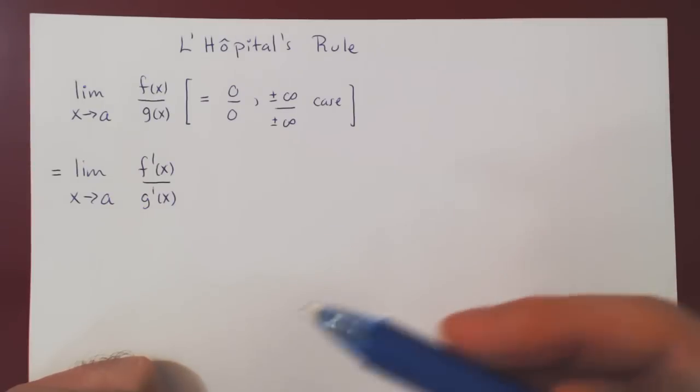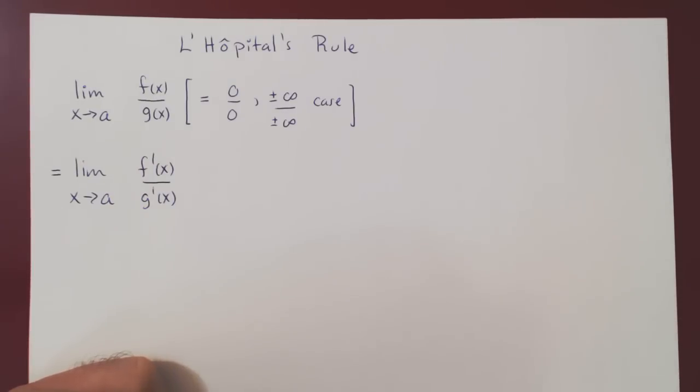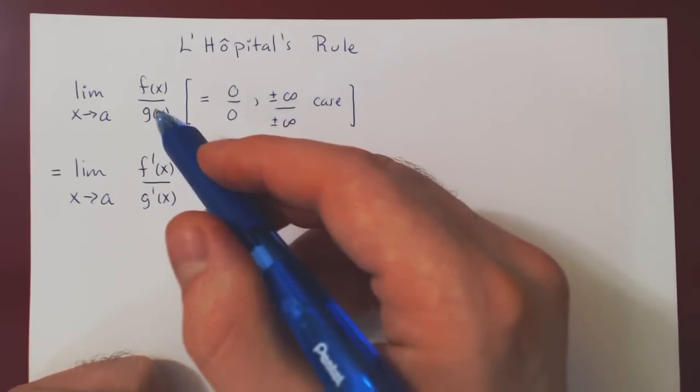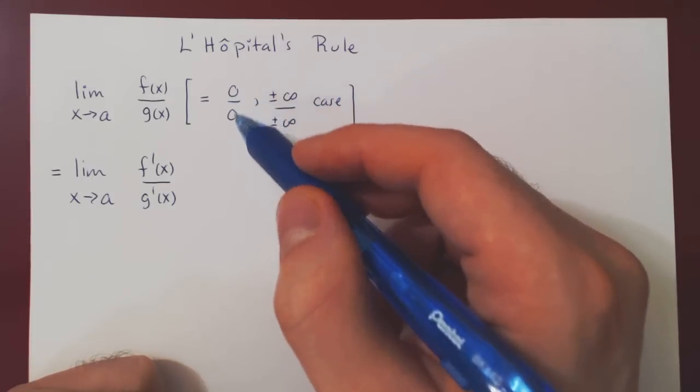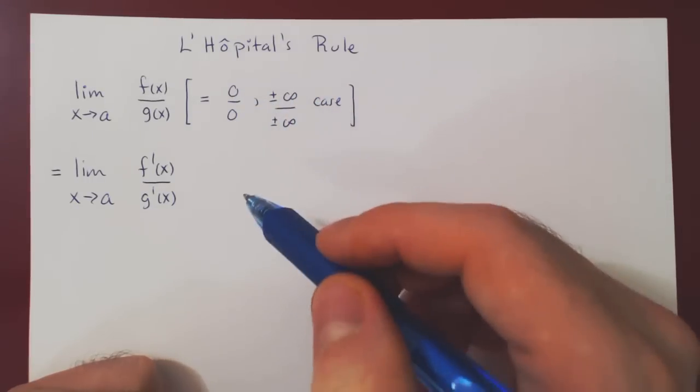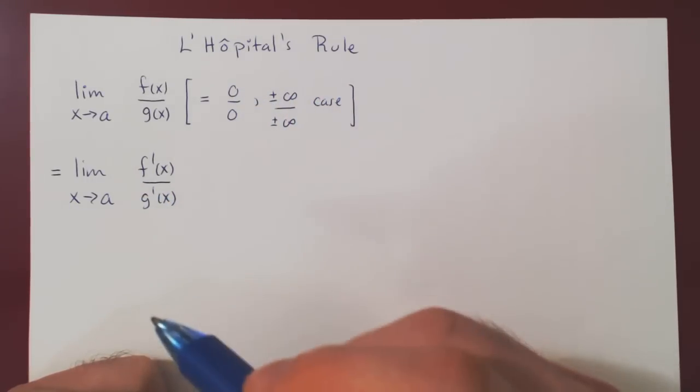Now, one thing that is nice, and we'll see in our last example in this video, is if the new limit returns a 0 over 0 case or infinity over infinity case, you can apply L'Hopital's rule once again.